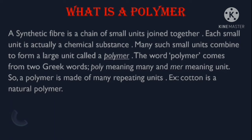What is a polymer? A synthetic fiber is a chain of small units joined together. Each small unit is actually a chemical substance. Many such small units combine to form a large unit called a polymer. The word polymer comes from two Greek words: poly, meaning many, and mer, meaning a unit. So a polymer is made up of many repeating units. For example, cotton is a natural polymer.